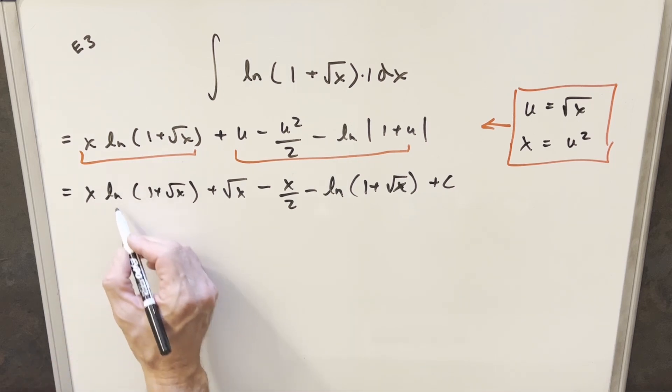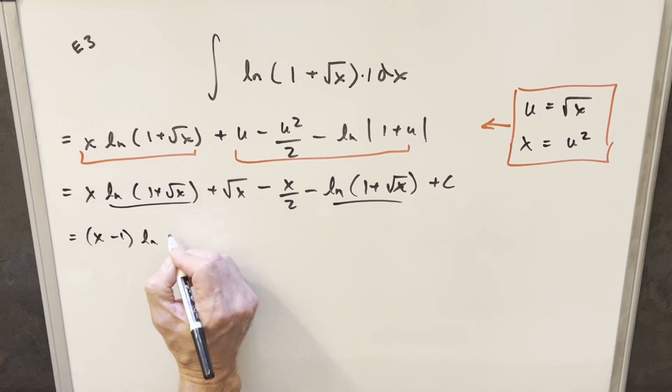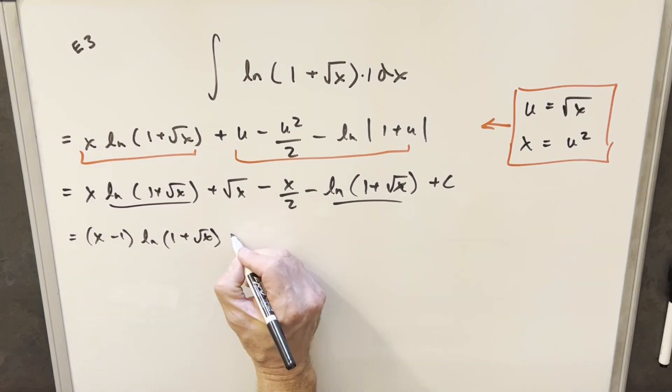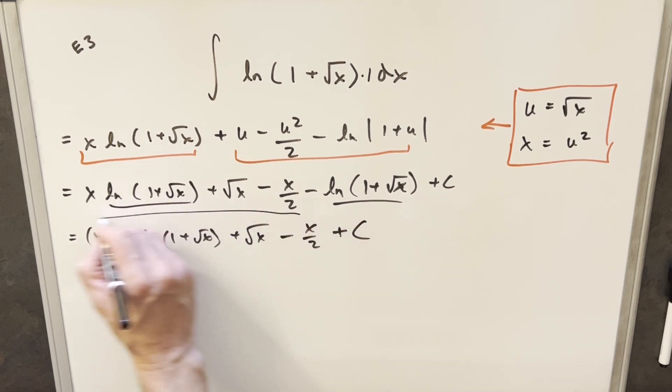And then one other thing for our final solution is I'm just going to combine these natural log terms. And so I'm going to write this as x minus one natural log one plus square root of x plus square root of x minus x over two plus c. And that's it.